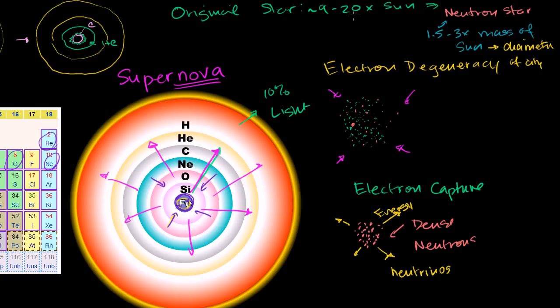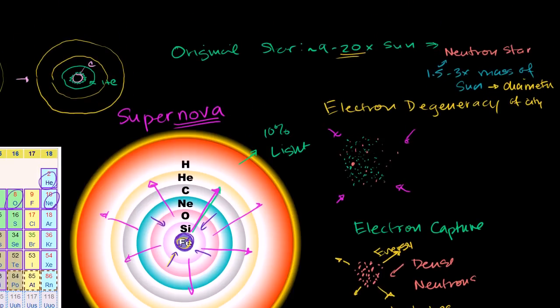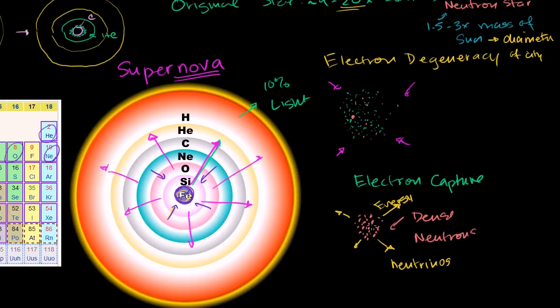Now, if the original star is even more massive, if it's more than 20 times the sun. So let me write it over here. If it's greater than 20 times the sun, then even the neutron degeneracy pressure, even the neutron's inability to squeeze further will give up, and it'll turn into a black hole.